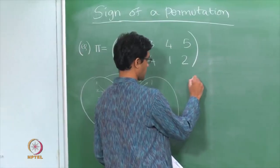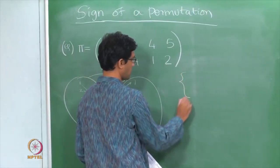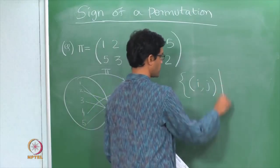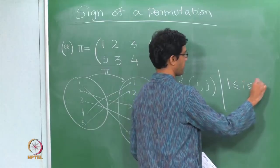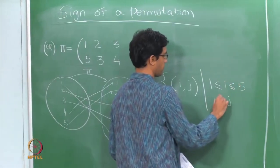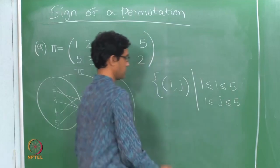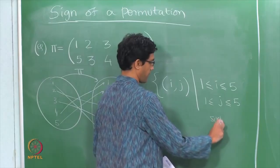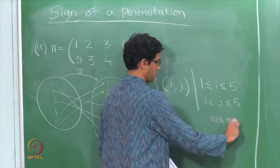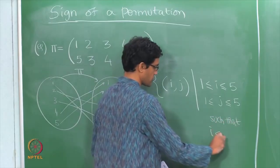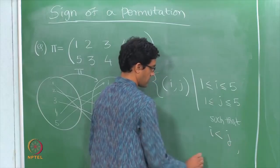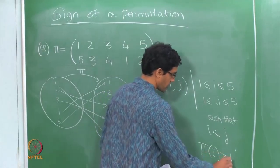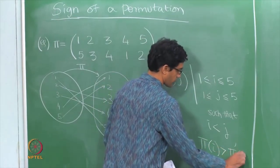Now consider the following set: all pairs (i, j) where i and j are numbers between 1 and 5, i is strictly smaller than j, but the image of i under pi — that is, pi(i) — is strictly bigger than pi(j).